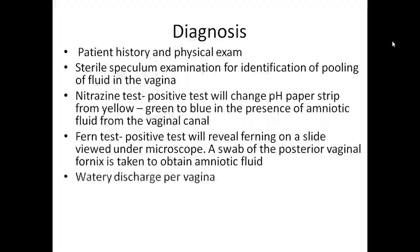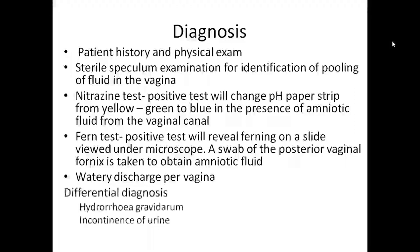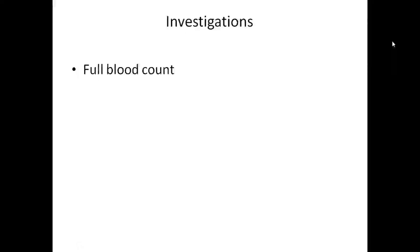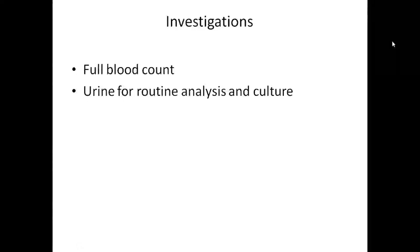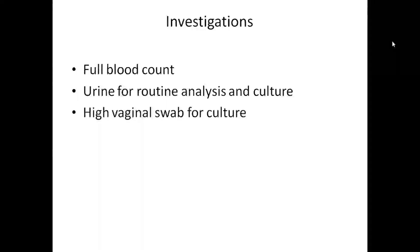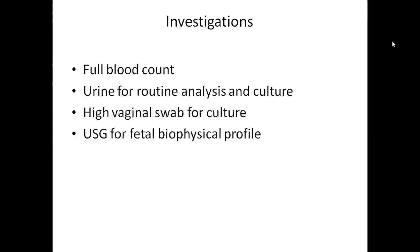A swab of positive vaginal ferning is taken to obtain amniotic fluid. Watery discharge per vagina is noted. Differential diagnosis includes hyperemesis gravidarum and incontinence of urine. Investigations include full blood count, urine for routine analysis and culture, high vaginal swab culture, and USG for fetal biophysical profile.